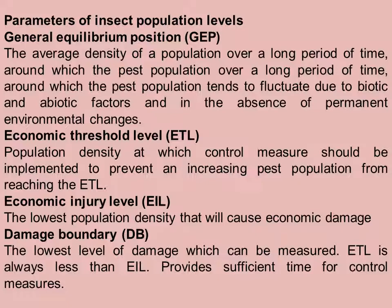The Economic Threshold Level (ETL) is the population density at which control measures should be implemented to prevent an increasing pest population from reaching the Economic Injury Level. As the population of insects goes on increasing, a stage is reached which is the threshold level. As the population crosses this threshold level, it becomes a pest. So it is essential to apply control measures at the ETL so that the insect stays at its general equilibrium position and does not attain pest status.